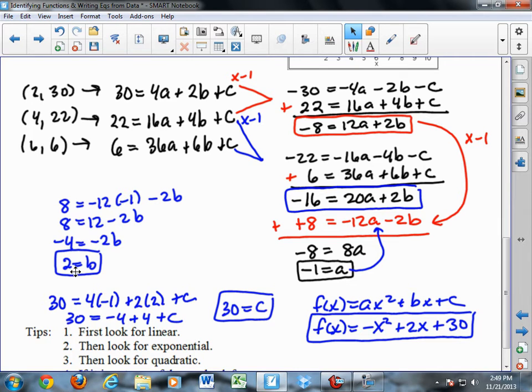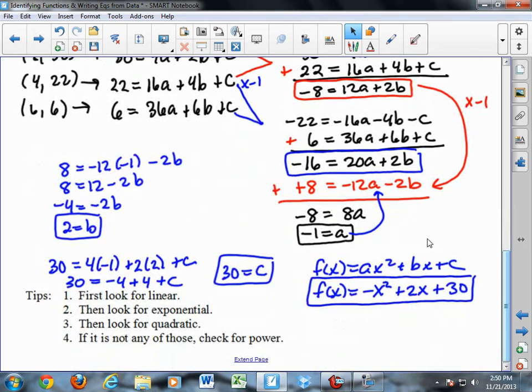So now I have a equals negative 1 and b equals 2. I'm going to take both of those values and put it in this first equation down here, and then I wrote that down here. 30 equals 4 times negative 1 plus 2 times 2 plus c. So 30 equals negative 4 plus 4 plus c. C equals 30. Now I have a, b, and c.